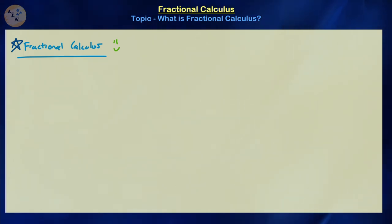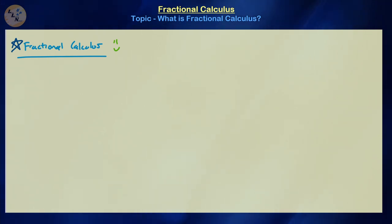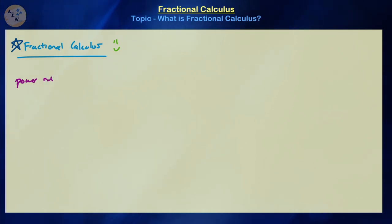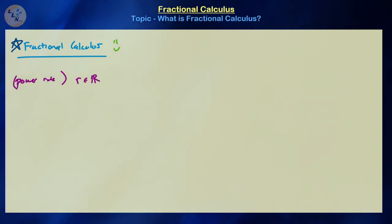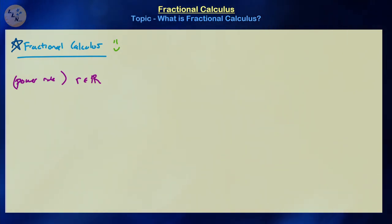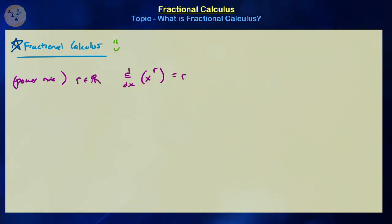Let's get started with a basic review of some things from integer order calculus that you should already be familiar with. For example, the power rule. We should already know that if r is a real number, the derivative of x to the power of r is equal to r times x to the r minus 1. This is what we refer to as the power rule.